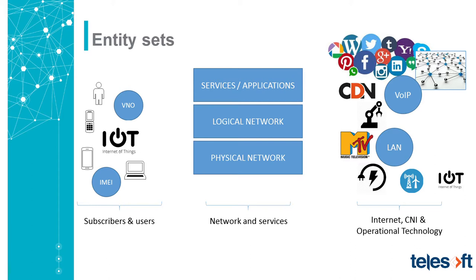Being able to group those things together and treat them as a single entity enables effective security operations. On the internet side, you can group peers, IoT devices, social media or applications, subsections of CDN networks, and operational technology and critical national infrastructure such as manufacturing plants, factories, operational technology robots, power utilities, and transport. Grouping all of these together significantly clears down the picture for security operations.